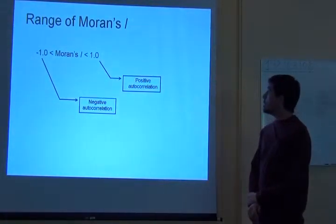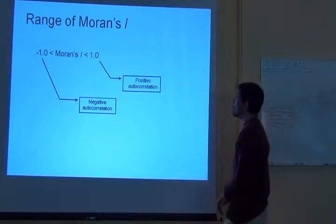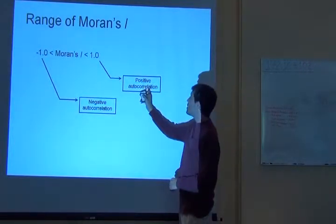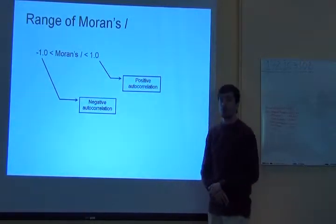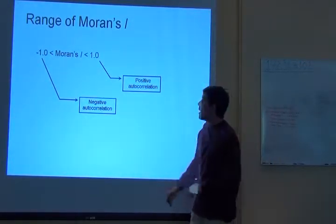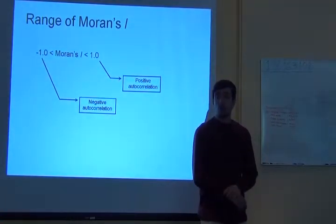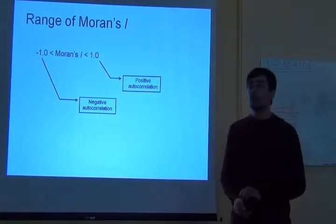So Moran's I tend to range between minus 1 and positive 1. And positive 1 is what we call positive autocorrelation. Things are similar. And minus 1 is what we call the negative autocorrelation. Things tend to be dissimilar.